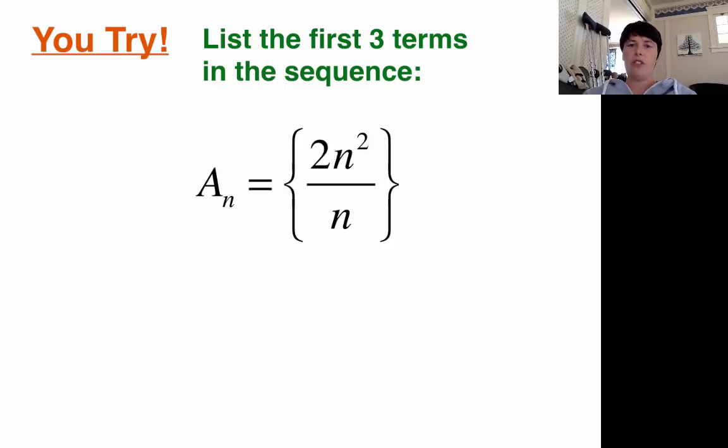Your job is to find the first three terms. So this is the part of the video where you click the pause button. You shut me off for a minute and you see if you can do this by yourself. It's a check for understanding. Are you getting this? So hit that pause button. Give it your best shot. And then we'll see if you got it.